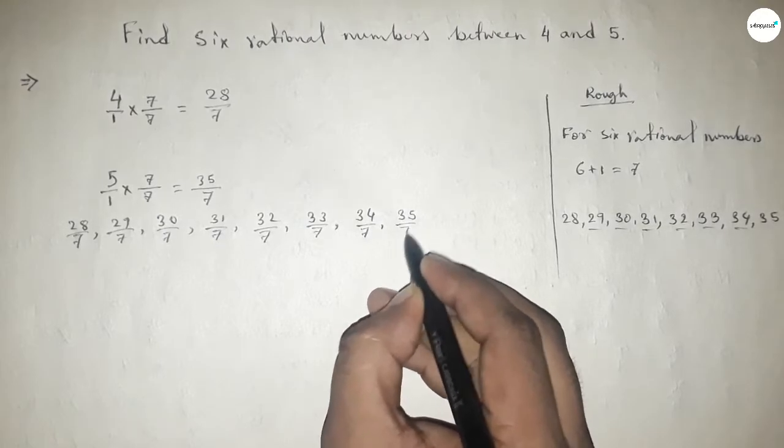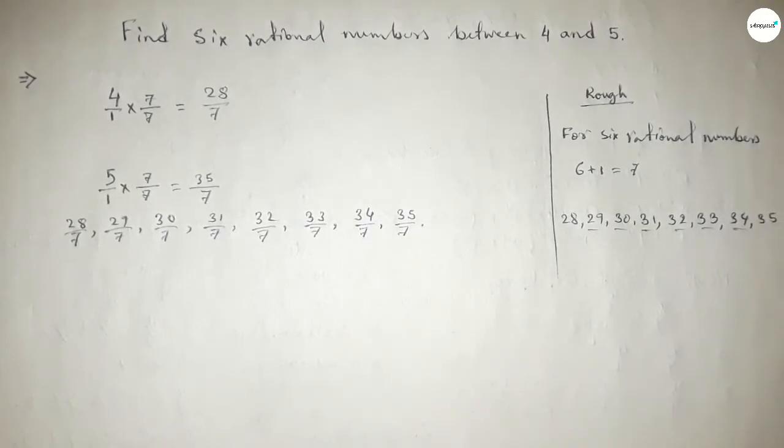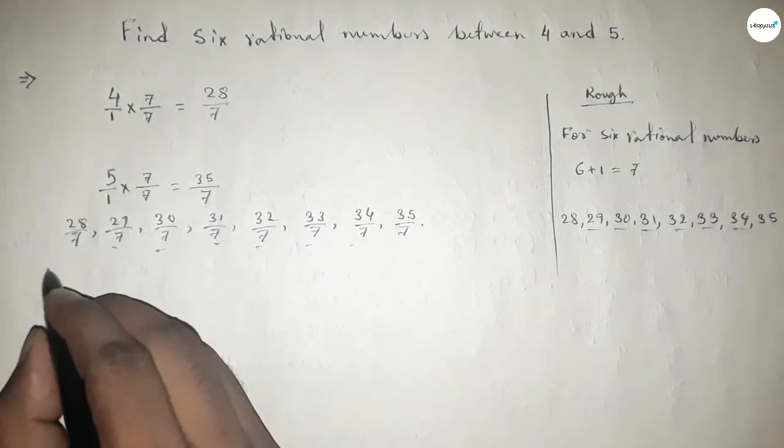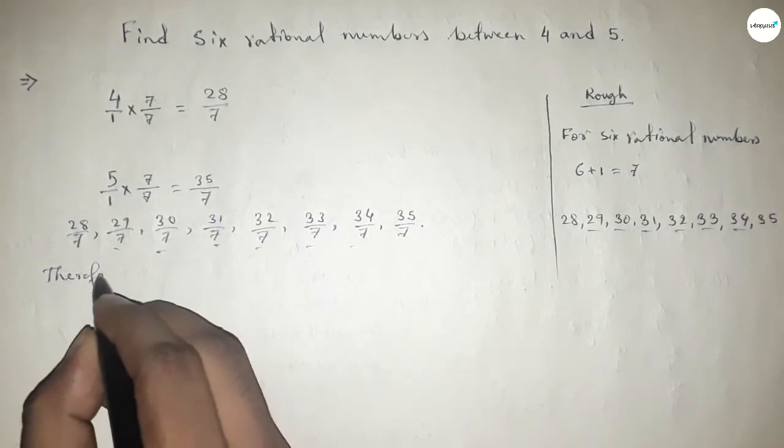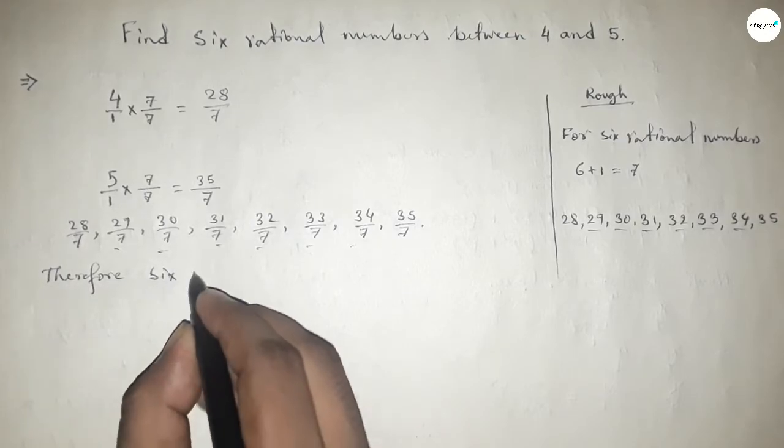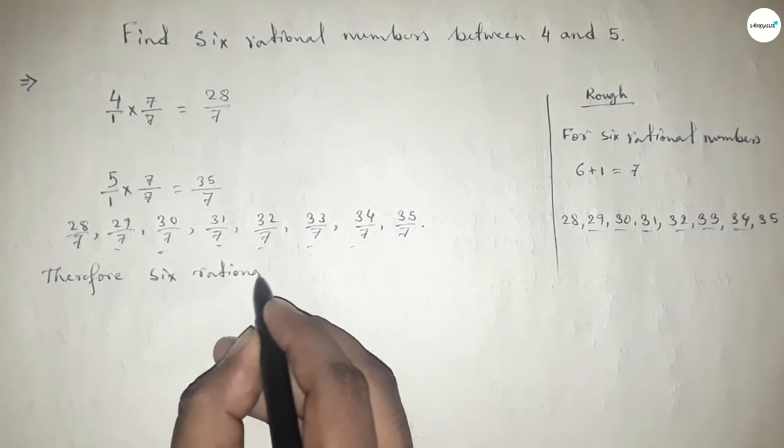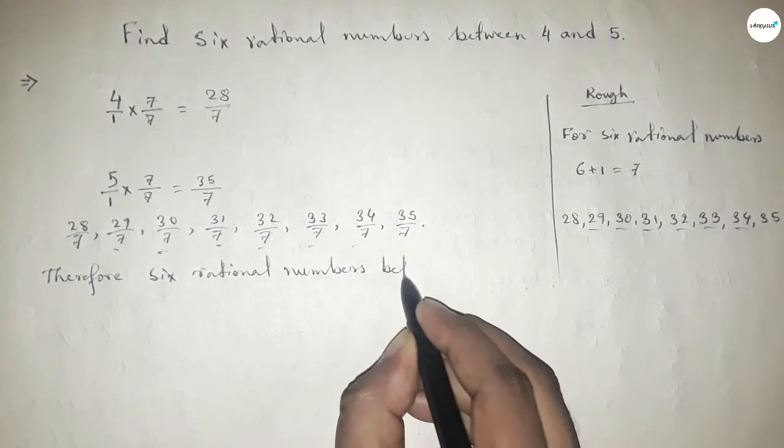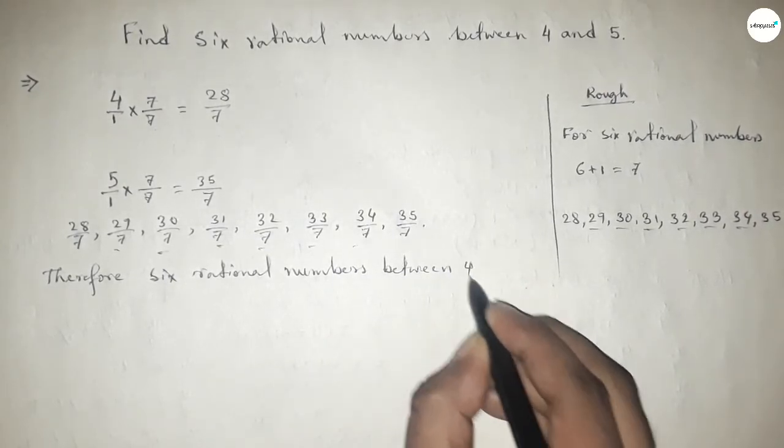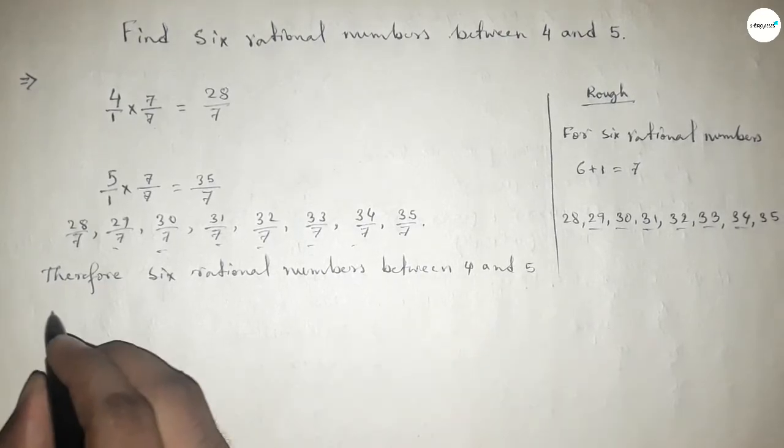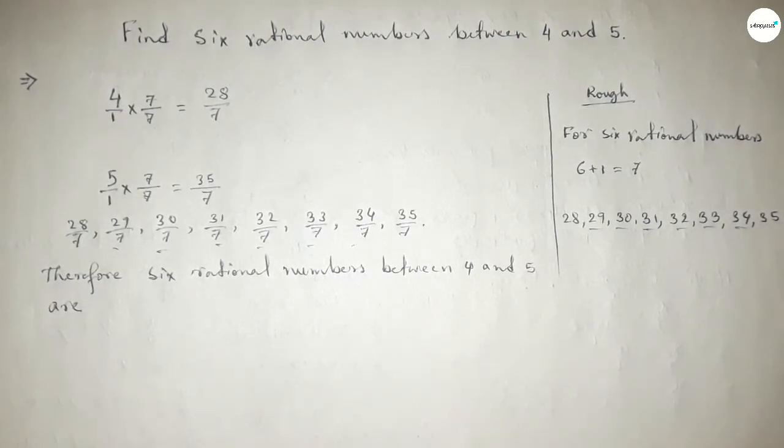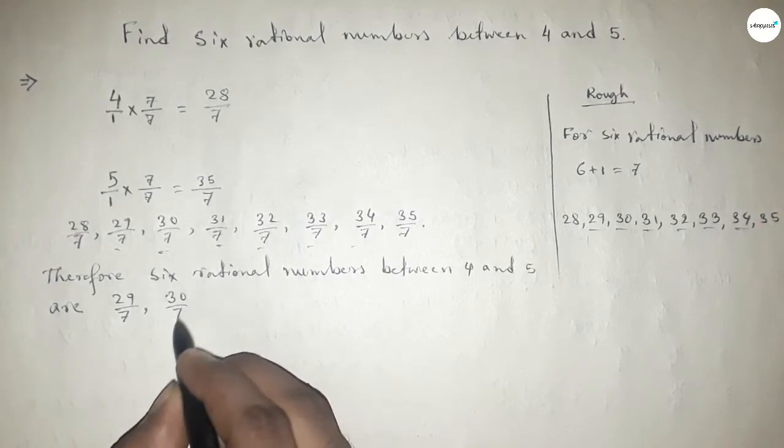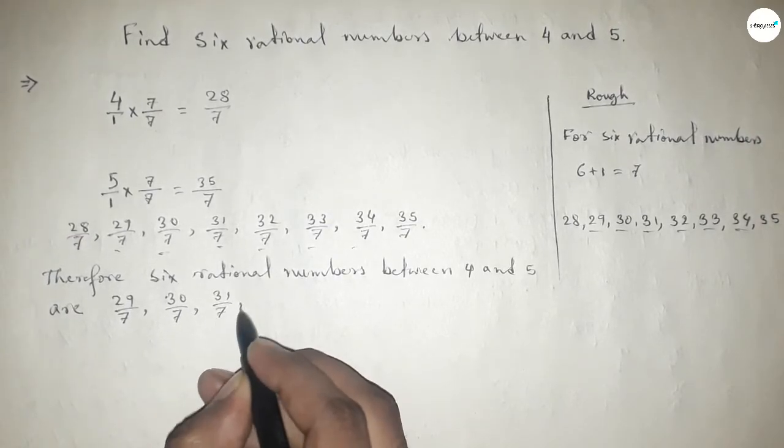And from these natural numbers we get rational numbers. These are the required six rational numbers between 4 and 5. So therefore, the six rational numbers between 4 and 5 are 29/7, 30/7, and up to 34/7.